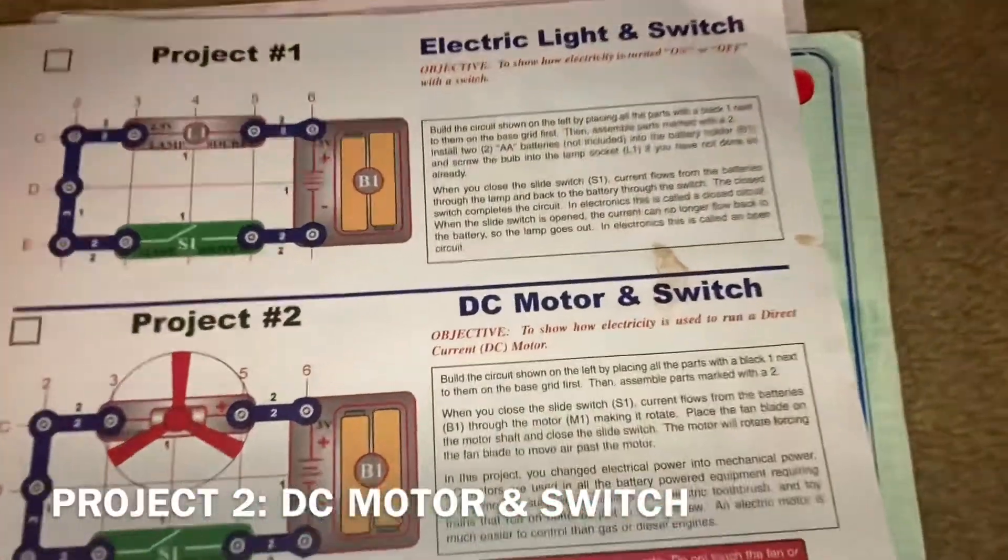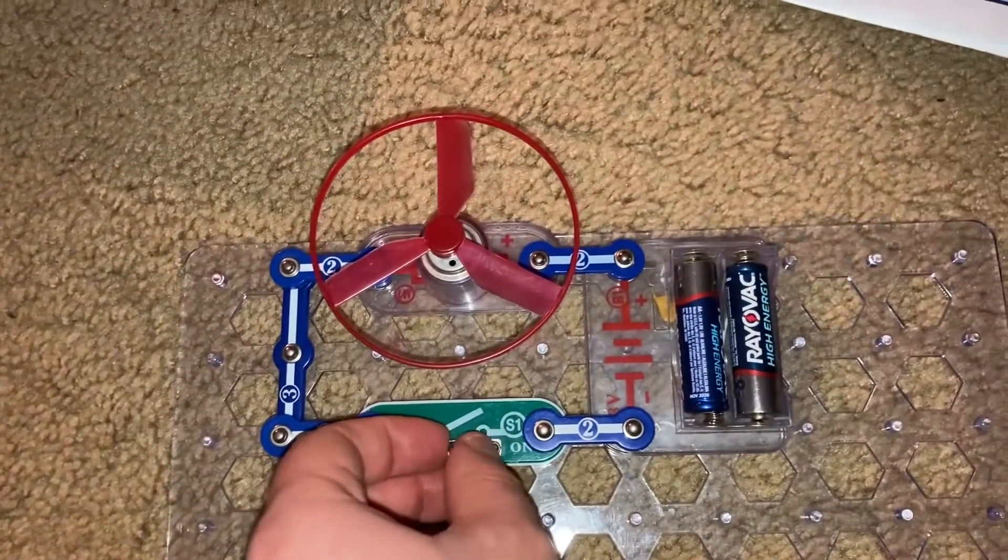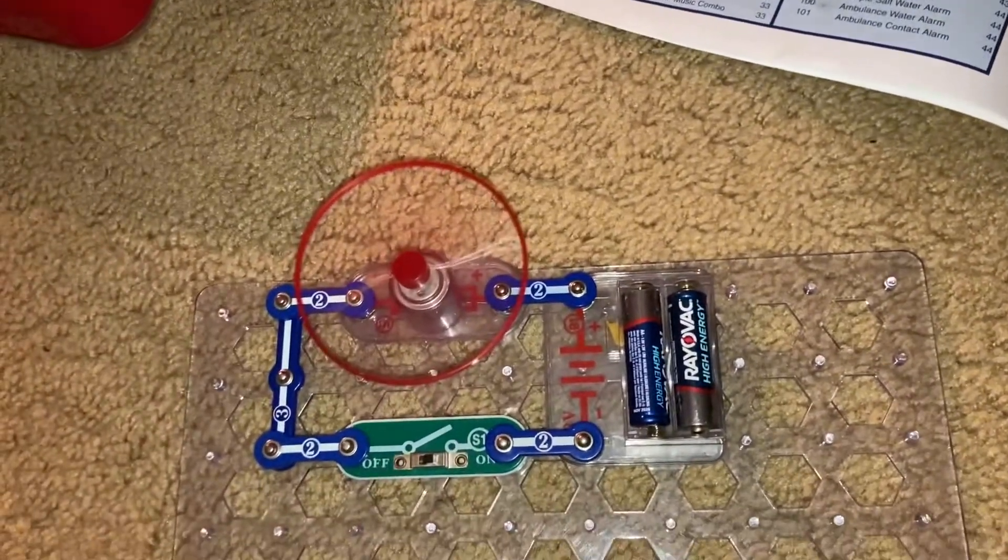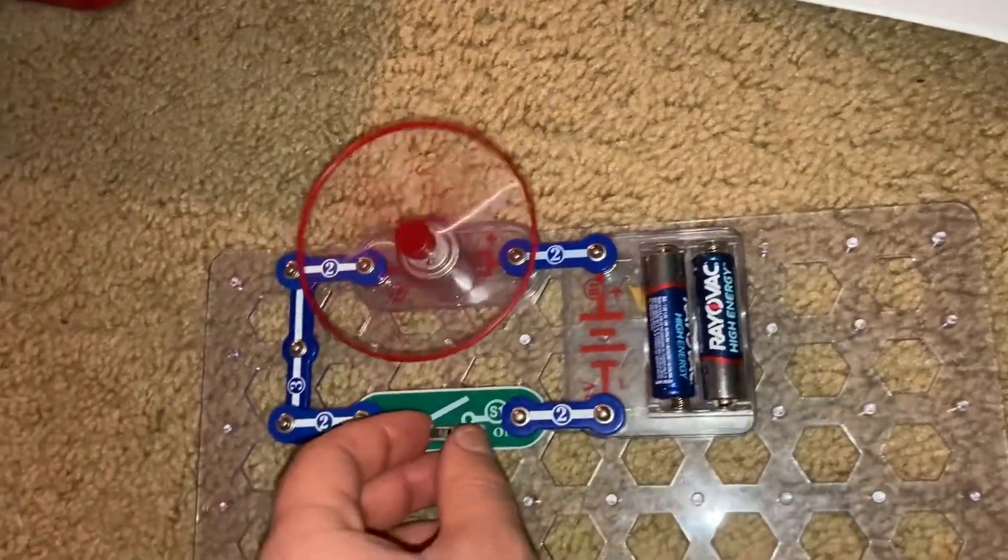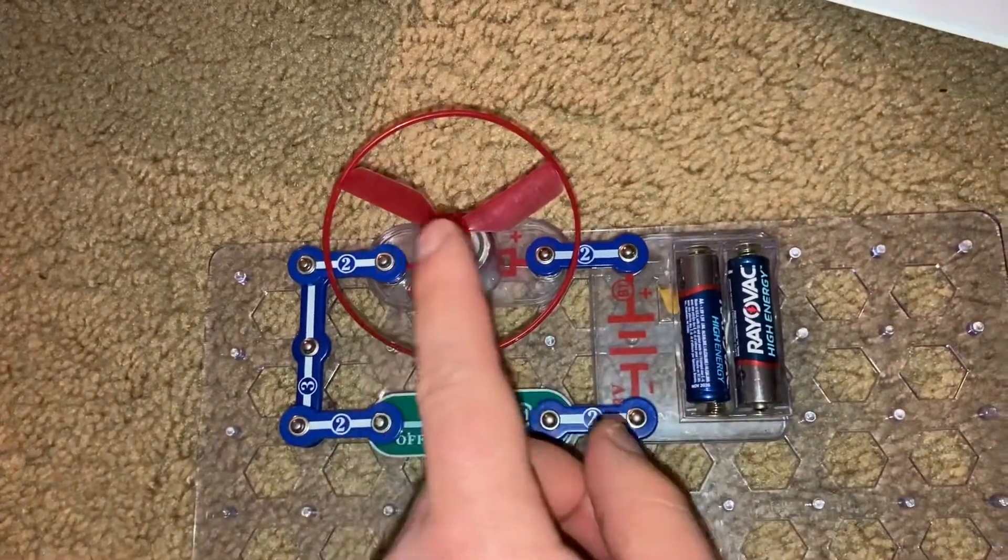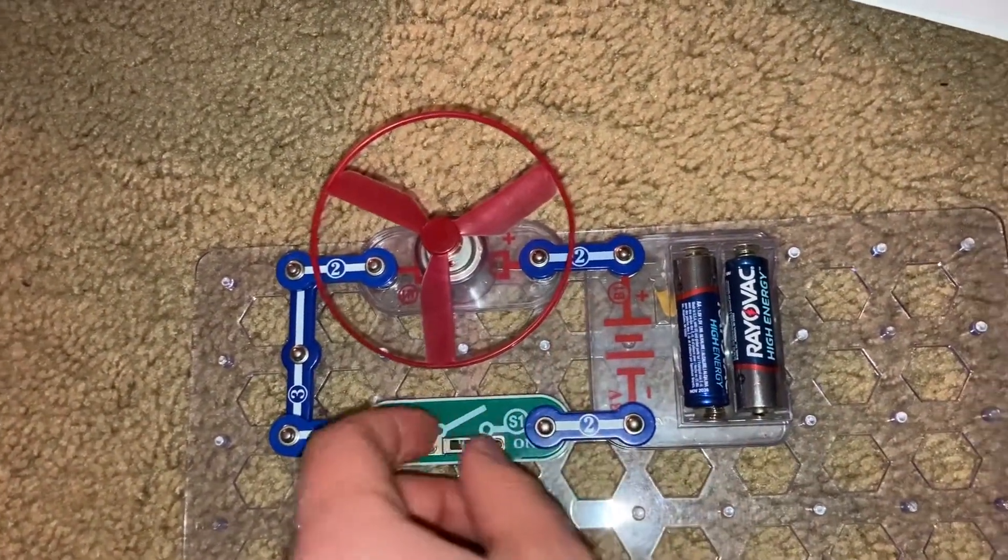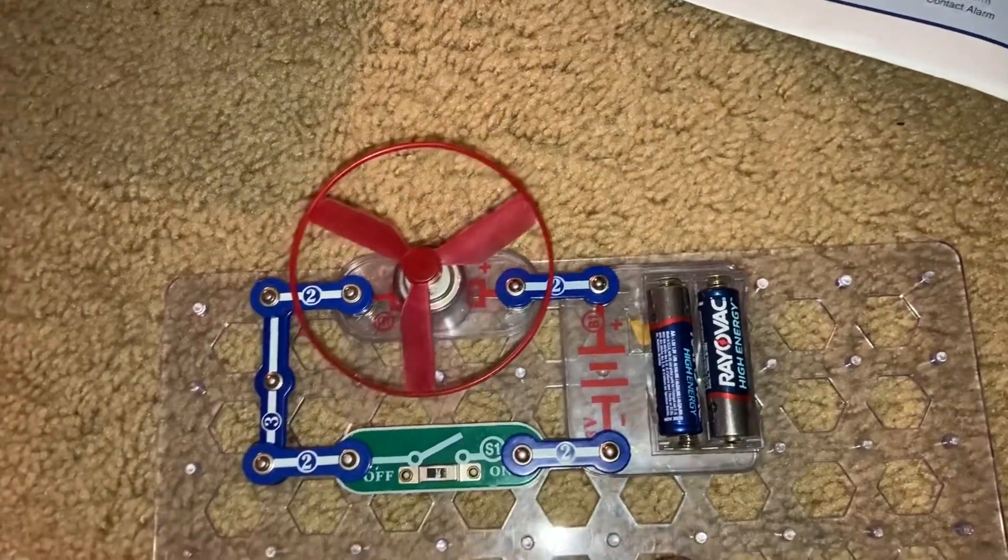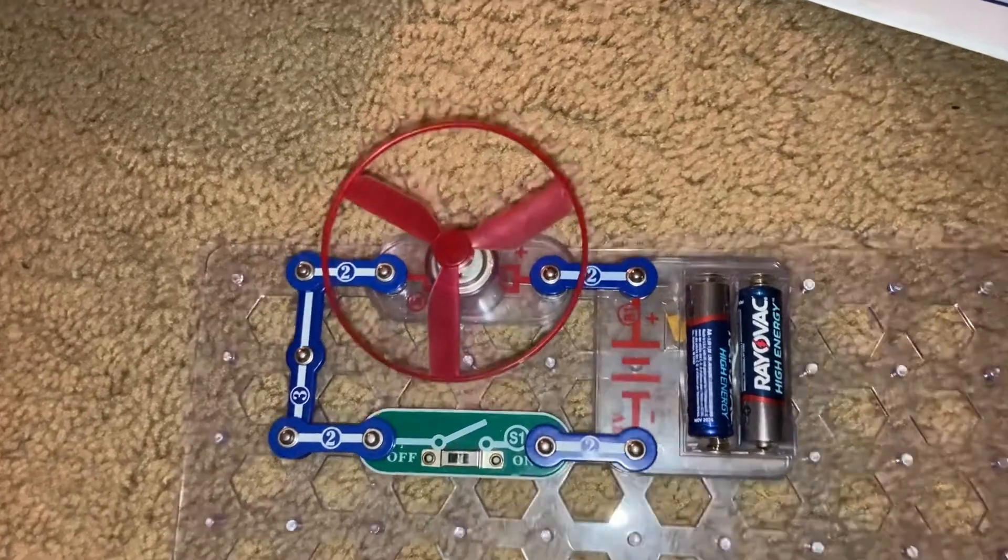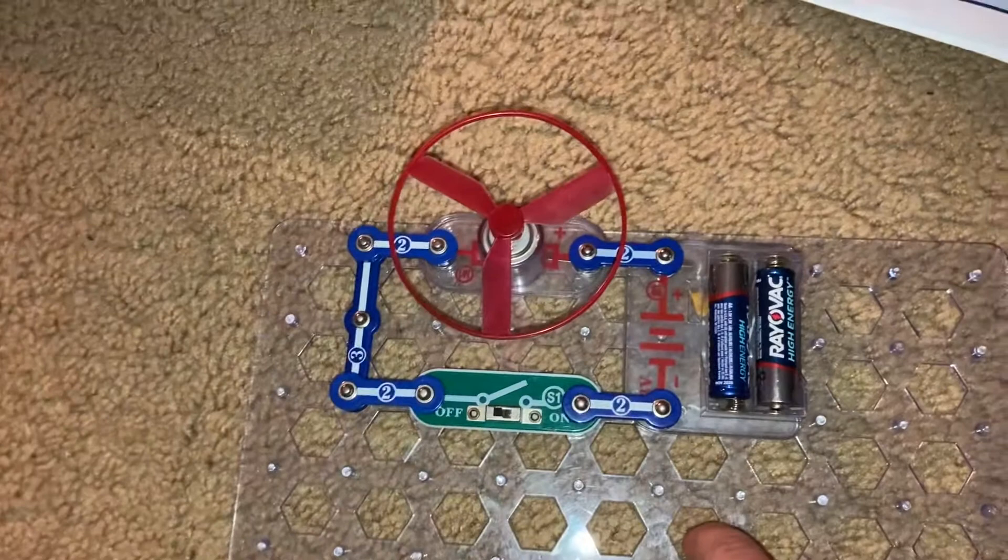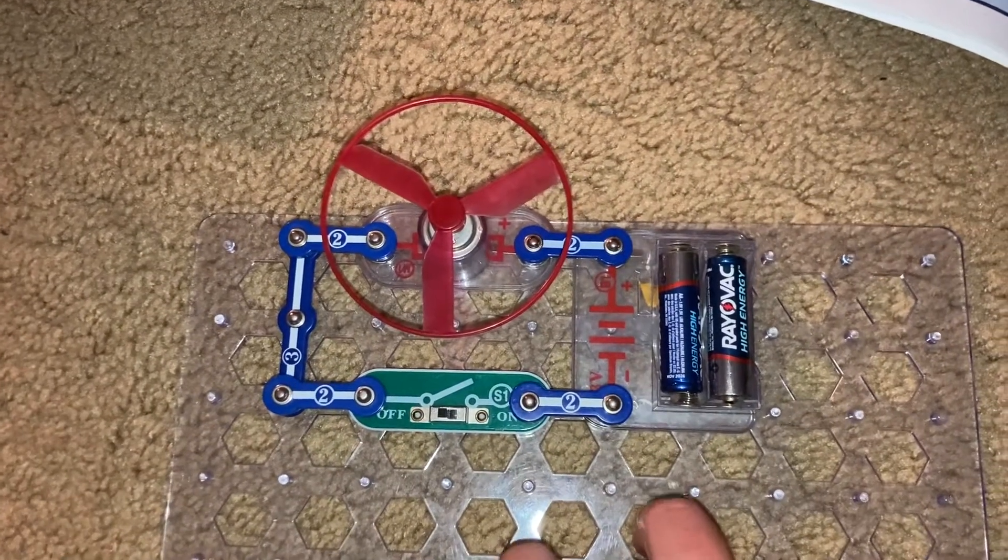Project two is DC motor and switch. When I turn on the slide switch, the motor with the fan on top spins. This is an example of electrical power being converted into mechanical power via the motor. And these types of motors are found on devices like fans, drills, electric toothbrushes, and toy trains that use electricity to operate.